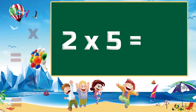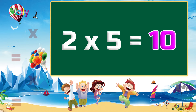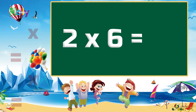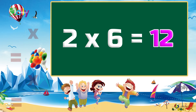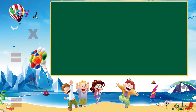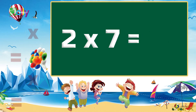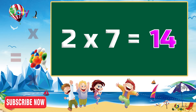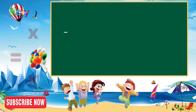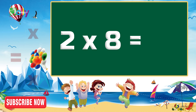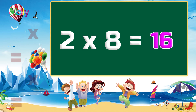Two fives are ten. Two sixes are twelve. Two sevens are fourteen. Two eights are sixteen.